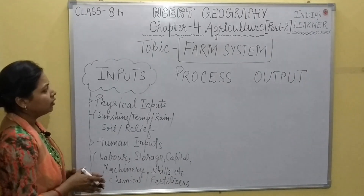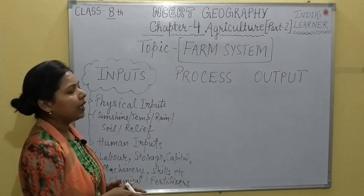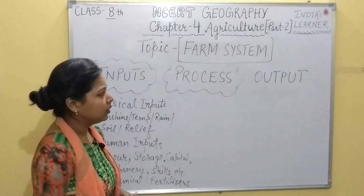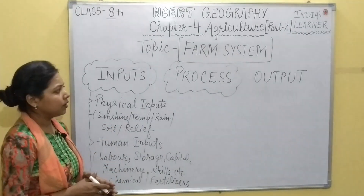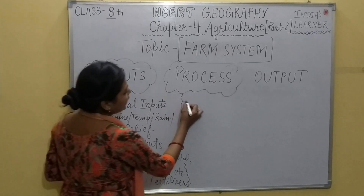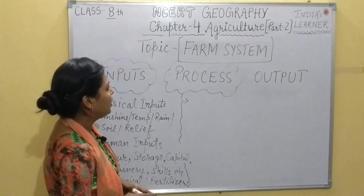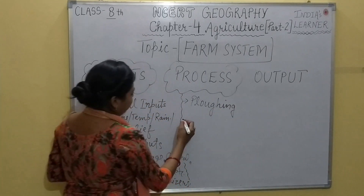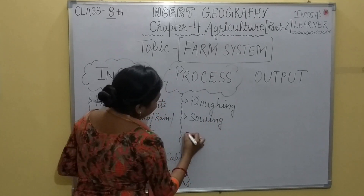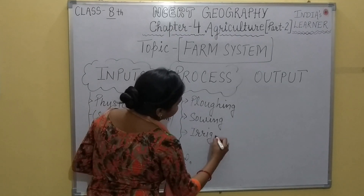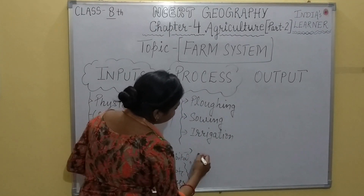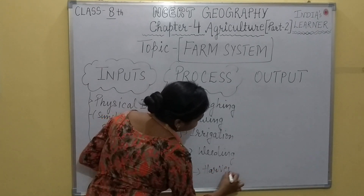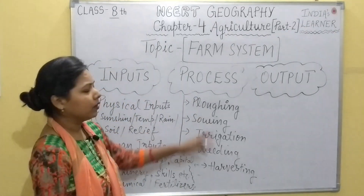Processes are the actions that need to be done in order to get the required output using the inputs. Mainly, in the process of agriculture, we can see different kinds of activities done in order. First is plowing — to plow the fields.